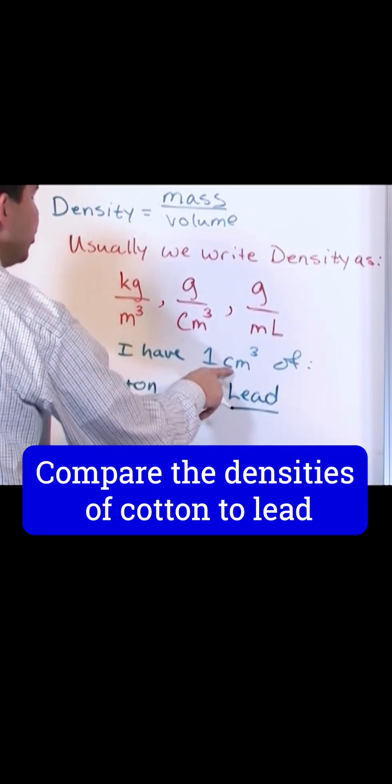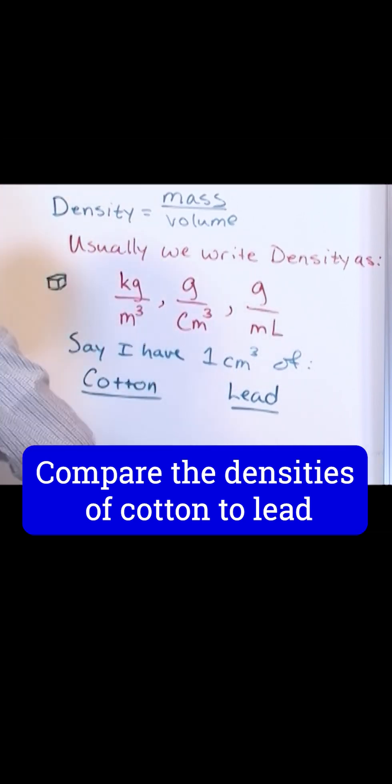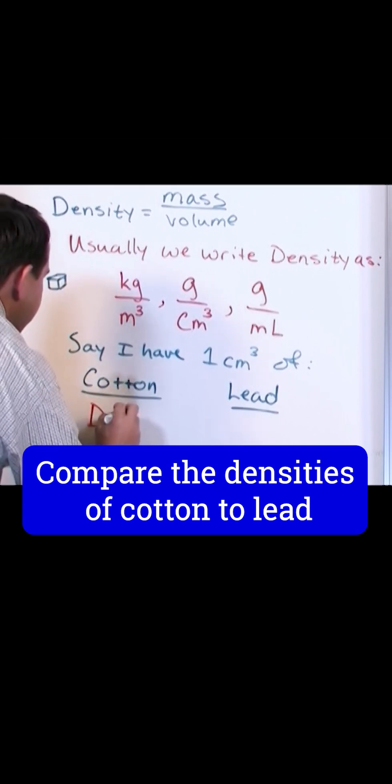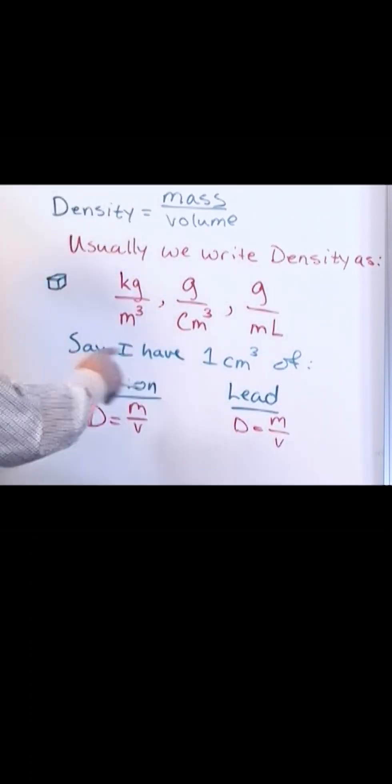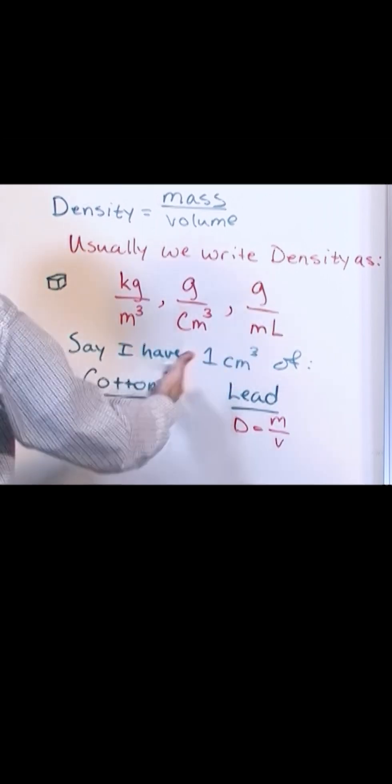Let's say that in both cases I only have one cubic centimeter of each of these things. So we say that the density is equal to the mass divided by the volume, for each case. But we know the volume is the same, we know we have one cubic centimeter of each thing.